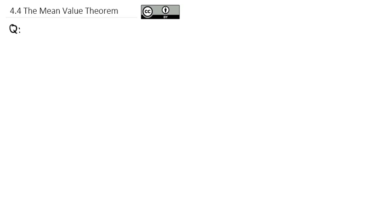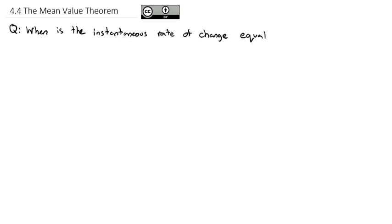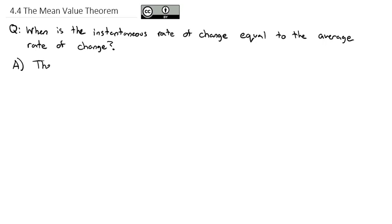Today we're going to take a look at what's called the mean value theorem. The mean value theorem answers the question: when is the instantaneous rate of change, or the rate of change at any specific moment, equal to the average rate of change? For example, if you go on an hour-long trip and you average 40 miles an hour, when were you actually driving 40 miles an hour? Sometimes you were driving faster, sometimes slower, but when were you actually equal to the average for the entire trip? This is what the mean value theorem finds for us.